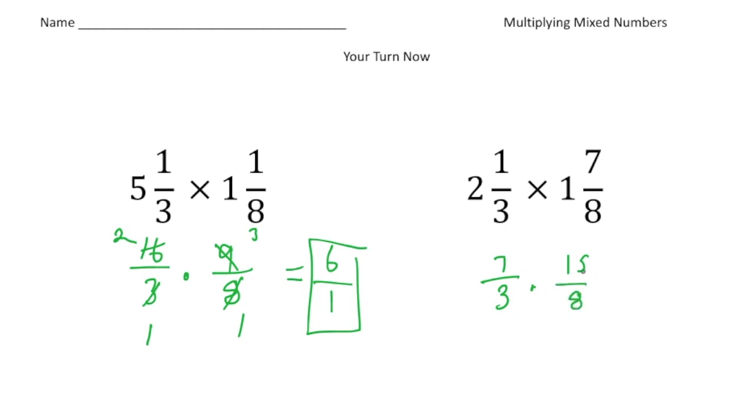And now we can't cross reduce, actually we can cross reduce the 15 and the 3. So I'm going to make this a 1 and make this a 5. And we cannot cross reduce the 7 and the 8. So now I multiply the numerators, 7 times 5 is 35, and when I multiply the denominators, 1 times 8 is 8. So 35 eighths is our answer.